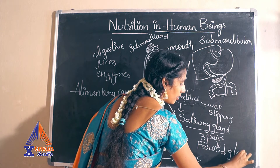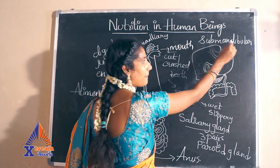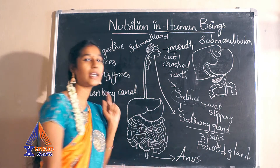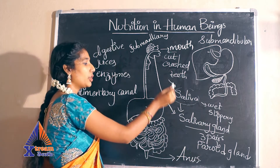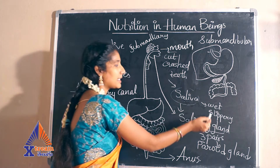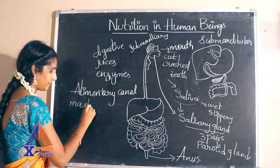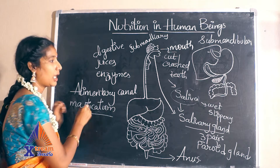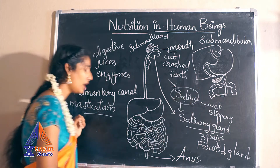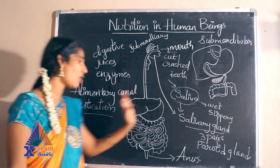So there are three pairs of salivary glands: first is the submandibular glands at the jaw, second is the sub-maxillary glands below the tongue, and the third is the parotid glands at the side of your ears. These salivary glands produce saliva in the mouth and make the food wet and slippery. The process by which food taken into the mouth is cut and crushed by our teeth, mixed with saliva, and made wet and slippery is called mastication.